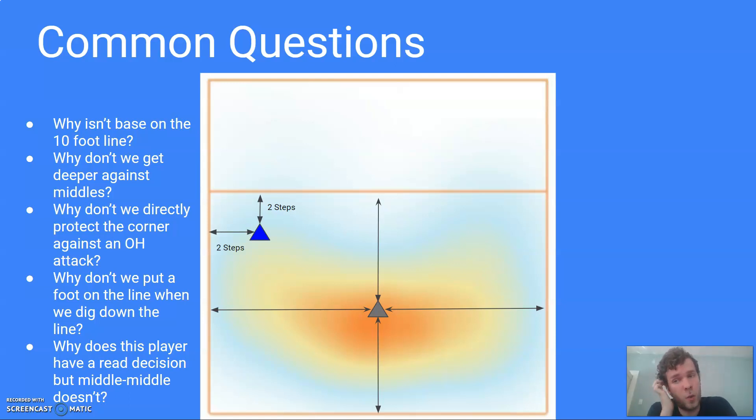Second question is why don't we get deeper against middles? The answer to that is basically you can't. Most middles are attacking so fast that if you're trying to back up and move to play this ball, they'll have hit it and you'll be too late. And also we know that still a lot of balls get hit right to these base positions when a middle attacker is hitting straight out of the middle. So we want to cover that play and play the deeper balls with our hands or rely on our middle back defender having a good read to move left to right and help us with those deeper balls.